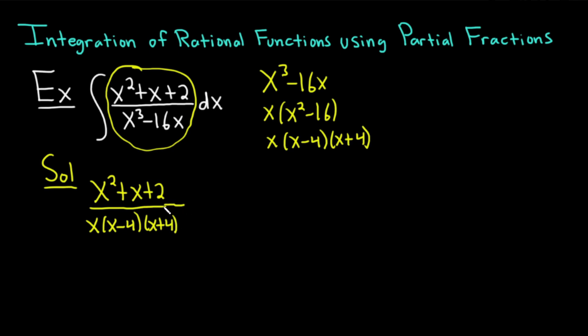And now we're going to set up what's called the partial fraction decomposition. We have linear factors, so we just use a constant. So it's A over x plus B over x minus 4 plus C over x plus 4. So we have set up the partial fraction decomposition. Because we have x, x minus 4, and x plus 4, you just write constants on top of each.